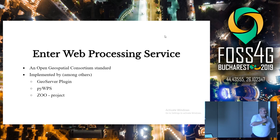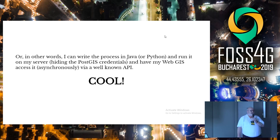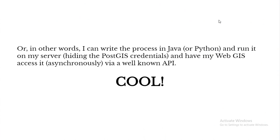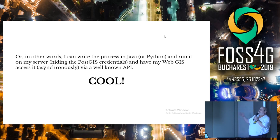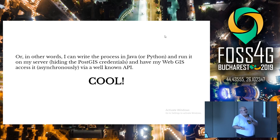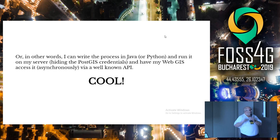As a GeoServer developer, I obviously used the GeoServer plugin, but I could have used any of them. I can write a process in Java — or Python if I really wanted to, even though we're a Python shop. I can run it on my server, which means I can keep the Postgres database credentials hidden without giving them to users. I can have my web GIS access it asynchronously if necessary. The original PINS specification insisted on async processing because their existing desktop software took five and a half hours to produce these reports — they were very keen on asynchronous processes. And it's got a well-known, well-documented API, so I can just pass the spec over to the JavaScript developers and they can read it.